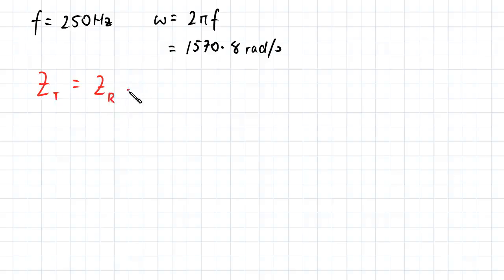...we note that our total impedance is just going to be the sum of the impedances. So the impedance of the resistor, plus the impedance of the capacitor, and finally added to the impedance of the inductor.